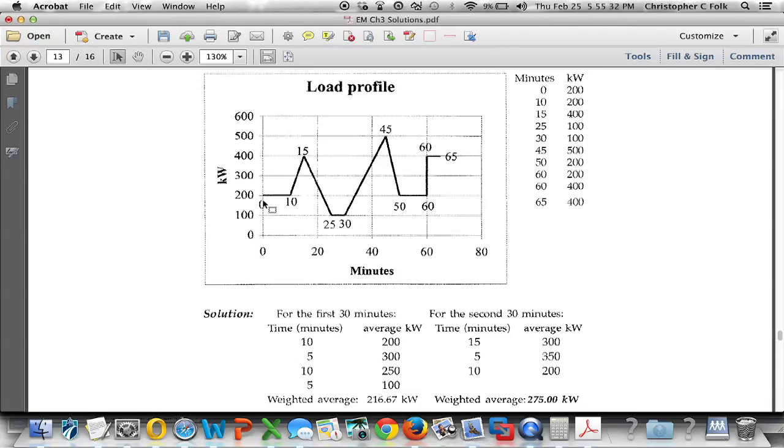So without using Excel, I looked at what the authors gave us here. So for the first 10 minutes, from 0 minutes to 10 minutes, we had a steady use of 200 kilowatts. And so it's pretty easy to say that that 10 minute period, we averaged 200 kilowatts. Well, from time 10 to time 15, that five minute period, we went from 200 kilowatts to 400 kilowatts.